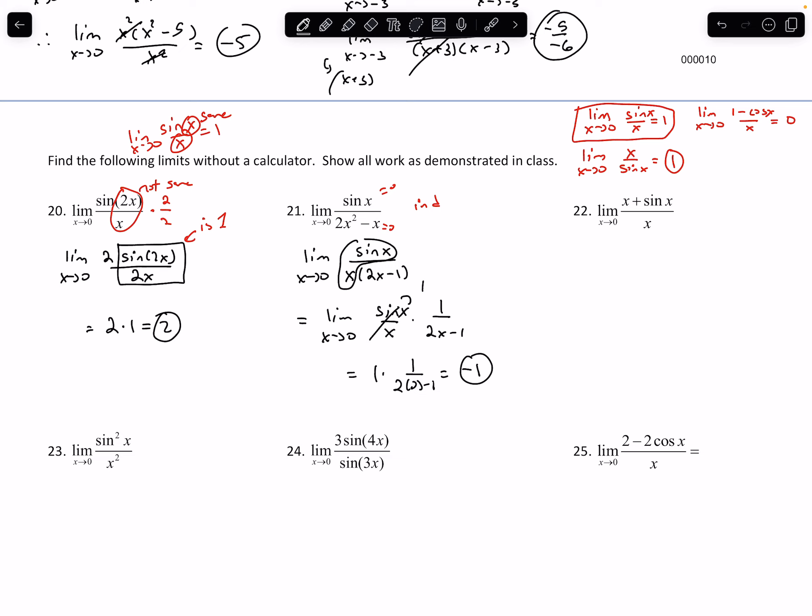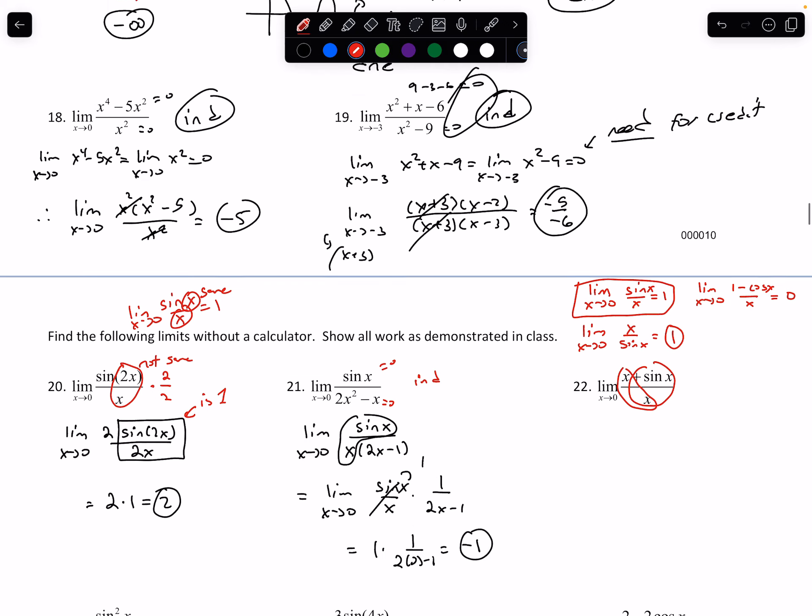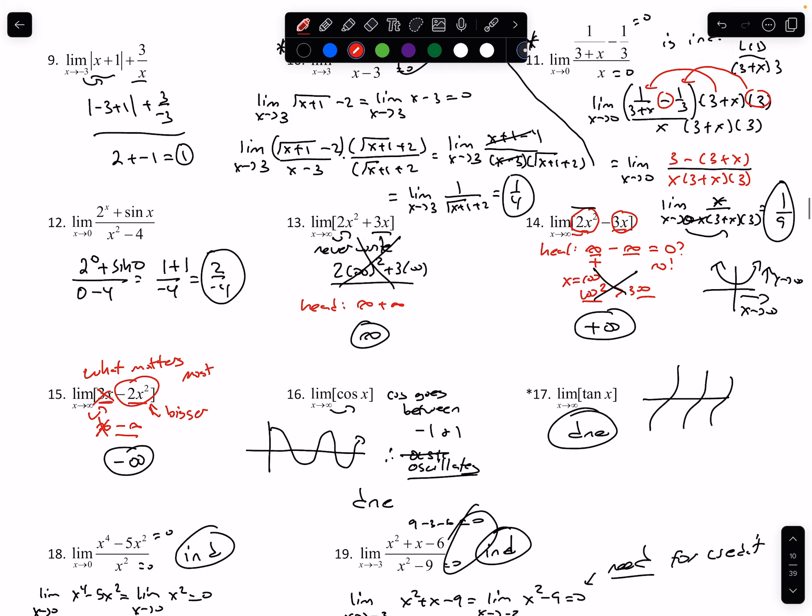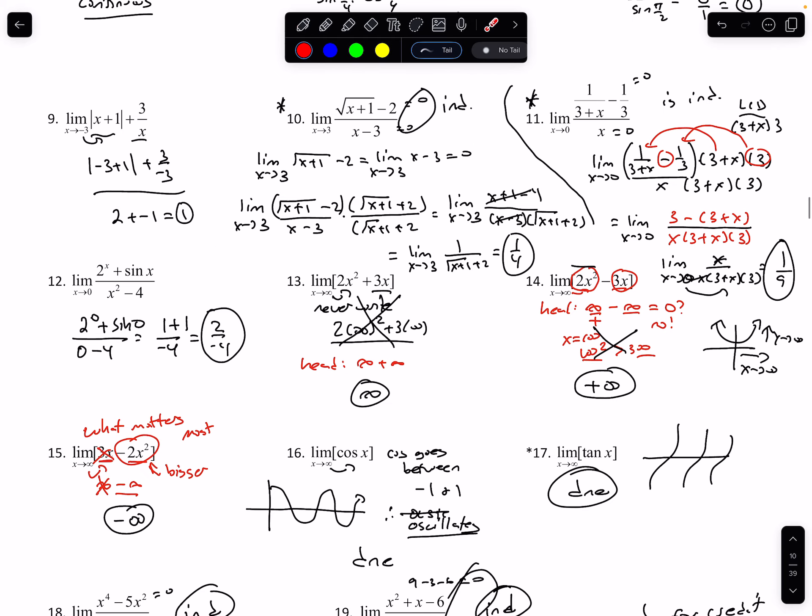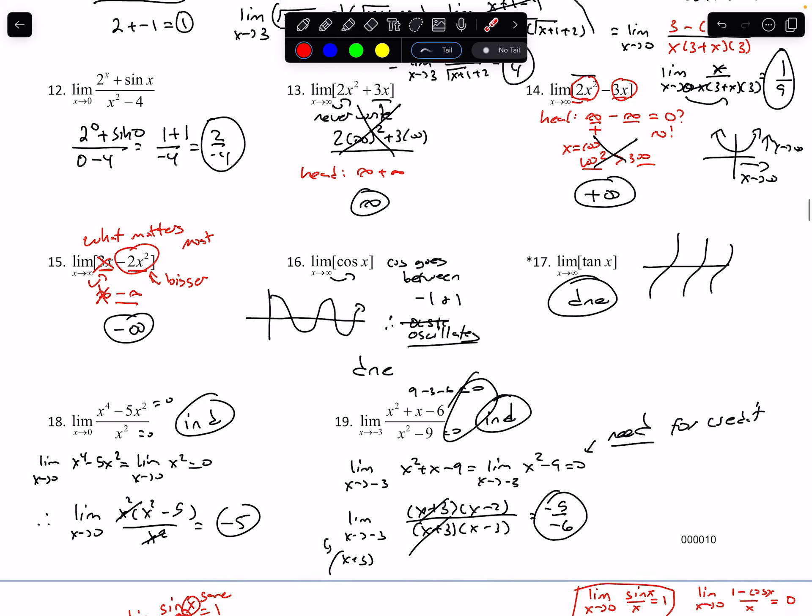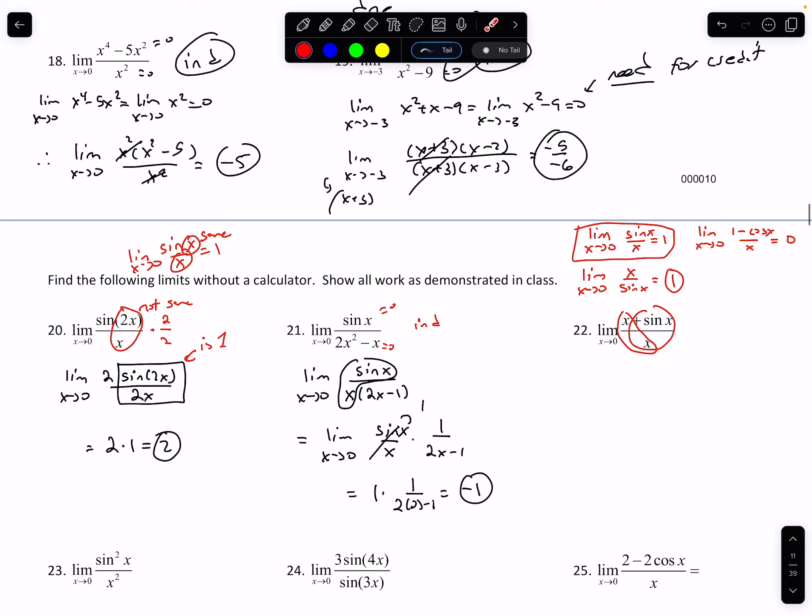For question 22, I can solve it the same way. Except for this one, where I get x plus sine of x over x, same thing, I'm going to get 0 over 0. So again, this is my indeterminate. But to solve it, I am going to split my fraction. Two things we can do. One, we can multiply by the LCD like we did in number 11. And that's a big topic. And the other one is, we can always split fractions if we're adding or subtracting in the numerator.